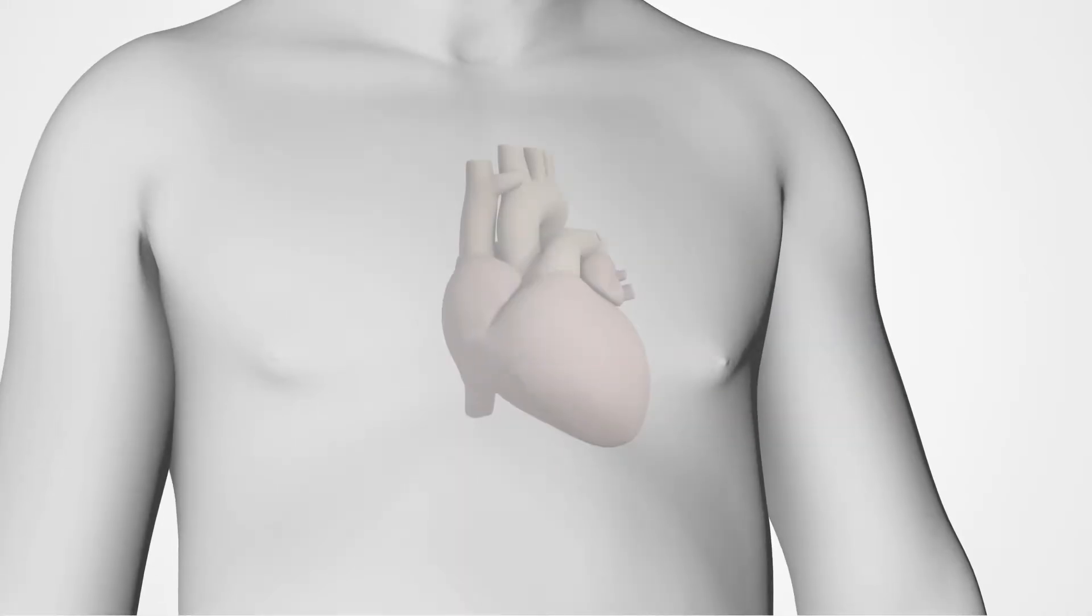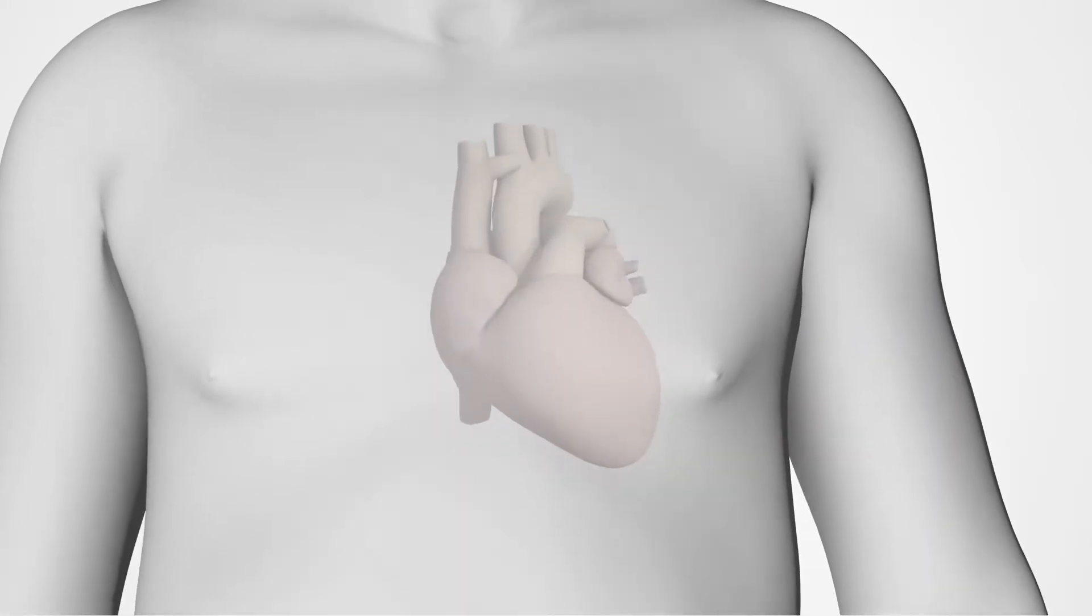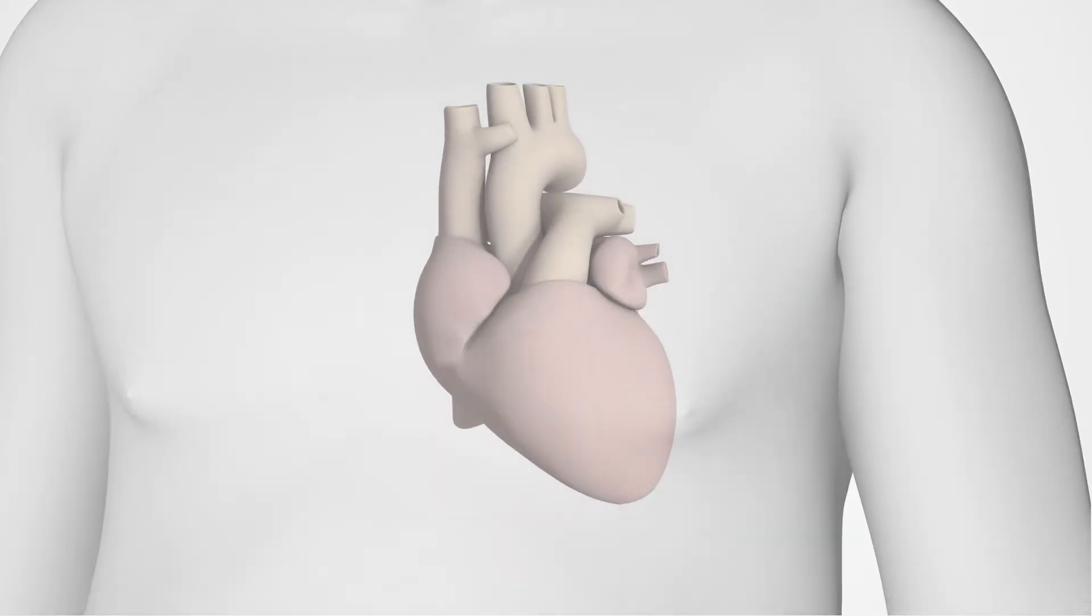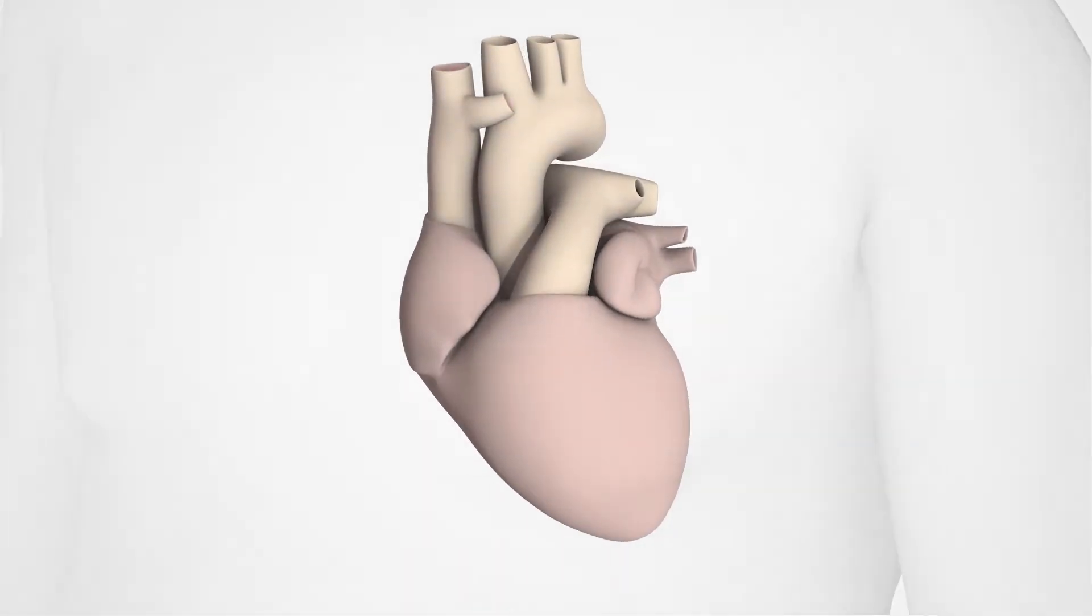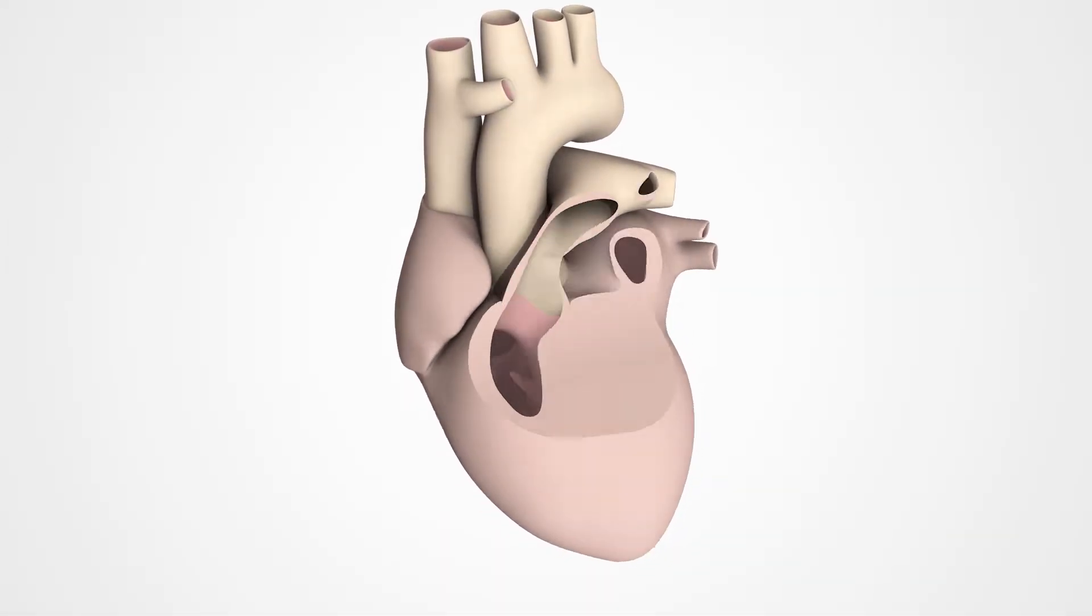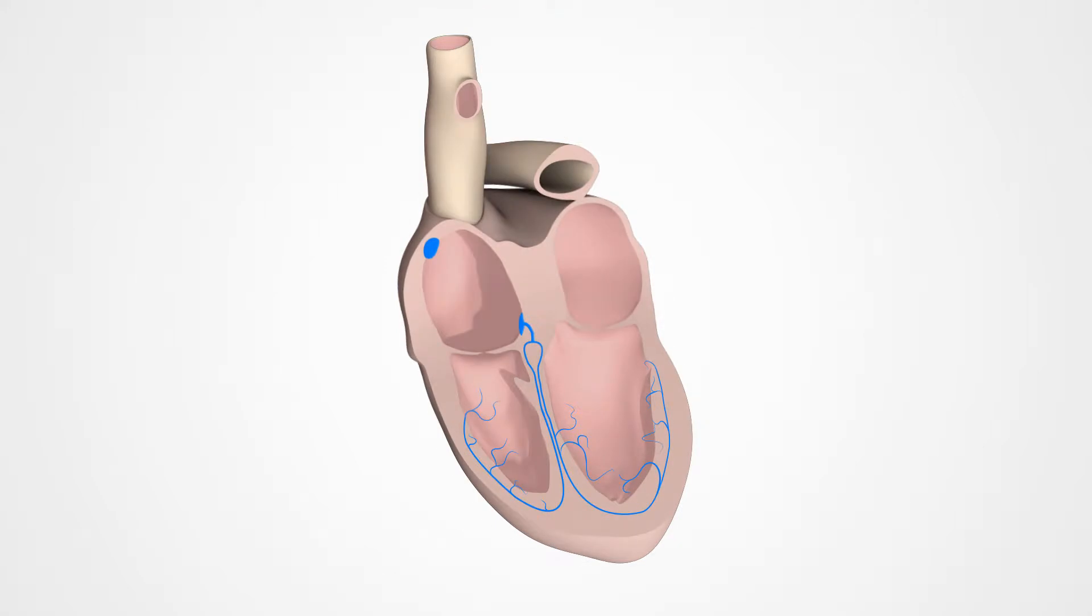AV-Block is a rhythm disorder that makes the heart beat too slowly. It is caused by problems with the way electrical signals are passed on in the heart and may occur temporarily or all the time.